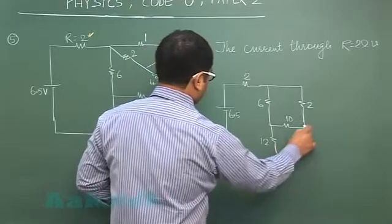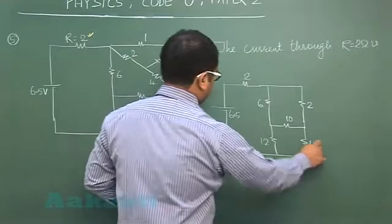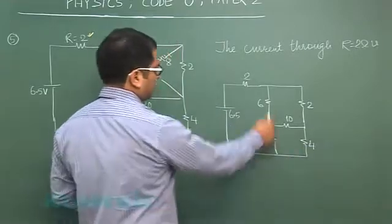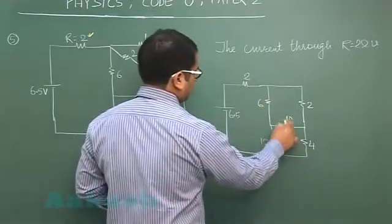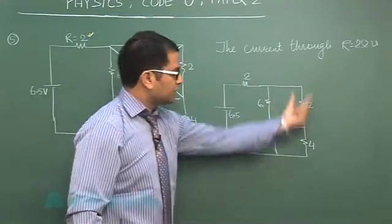Now it comes out to be a very simple circuit where these two resistances in series are in parallel with this group and eventually in series with this.